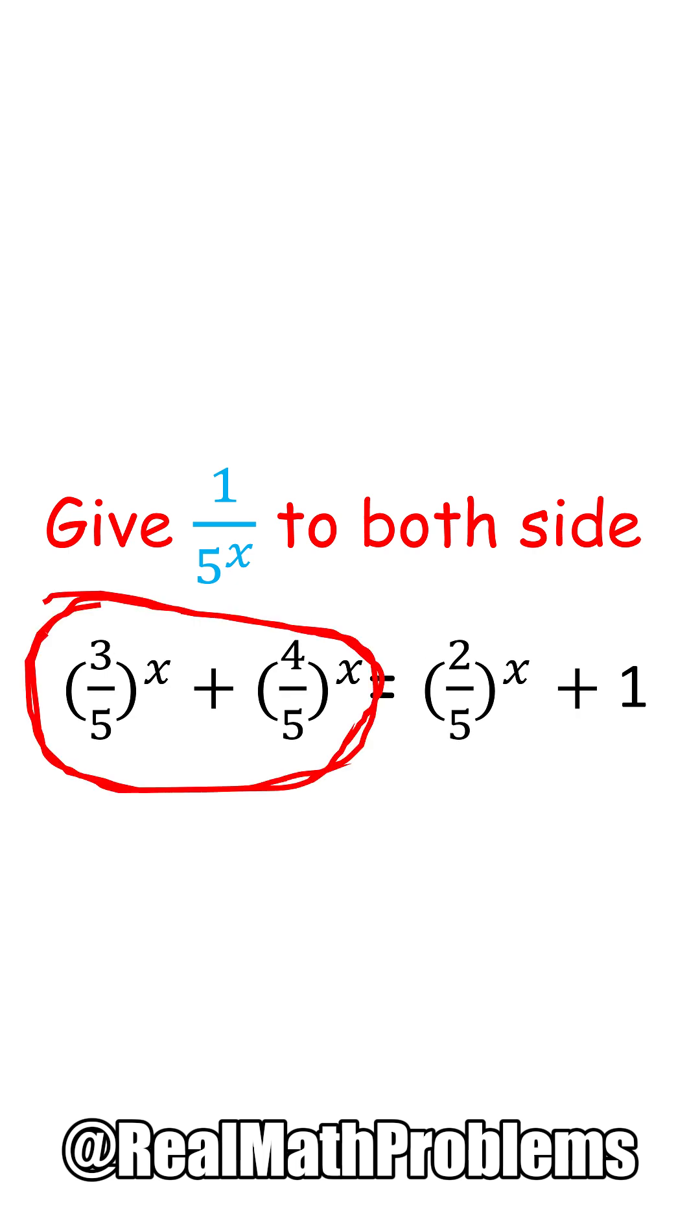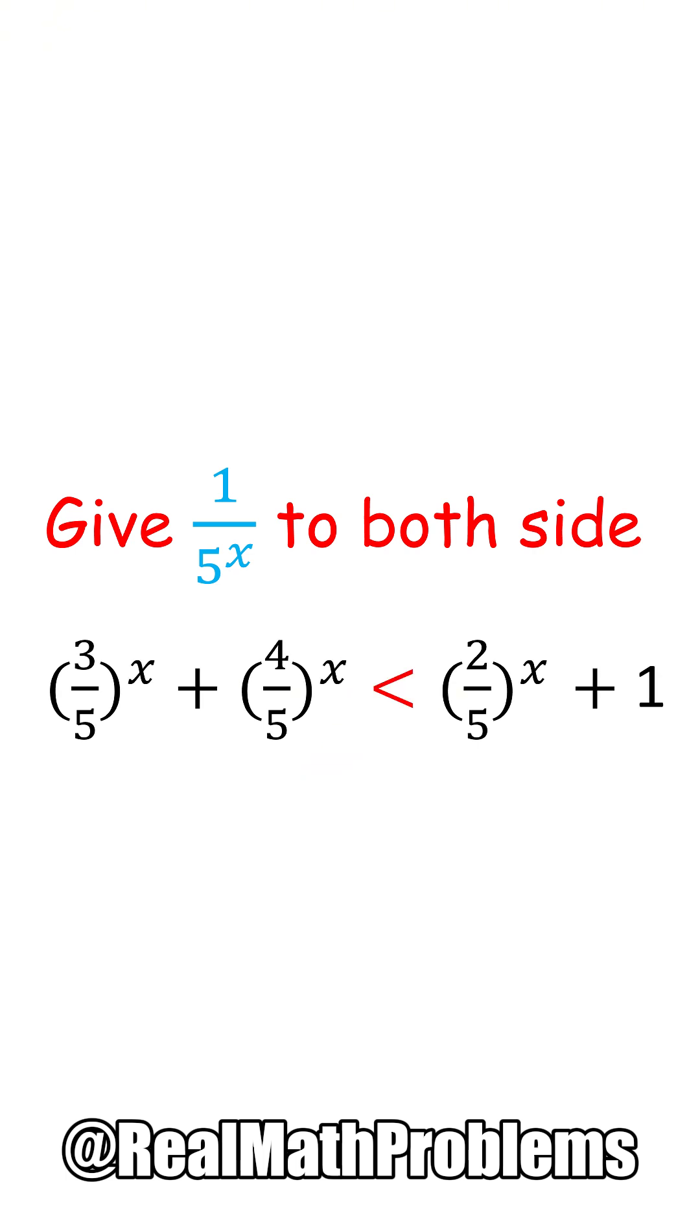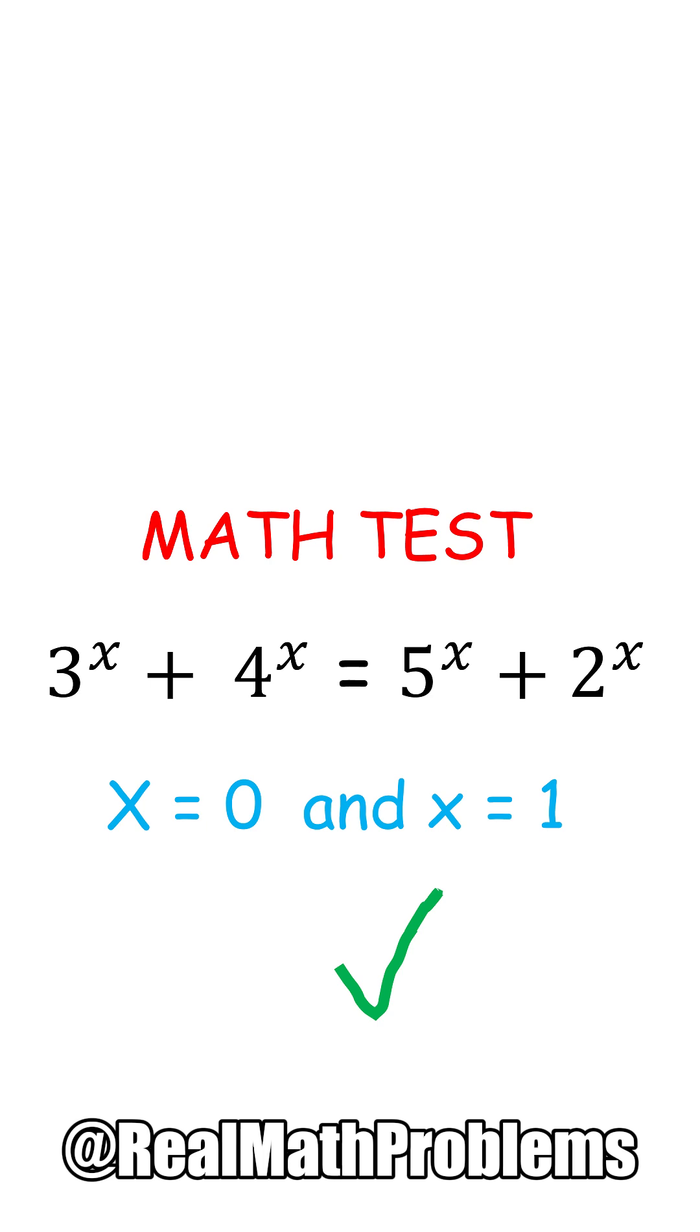Now pay attention to the left side. We can realize that 3 over 5 and 4 over 5 to the power of x is always less than 1 with all values of the real number x. So as the right side has 1 over there, it will just always be larger than the left side, which means the only solution for this problem is 0 and 1.